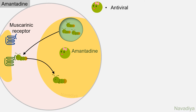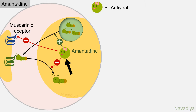Amantadine is primarily an antiviral drug; however, it works in parkinsonism also. It works by multiple mechanisms: it increases release of dopamine and decreases its reuptake, so more dopamine is available in the cleft to stimulate post-synaptic receptors. It also has anti-muscarinic effect and blocks glutamate NMDA receptors, which is thought to protect from excitotoxicity.